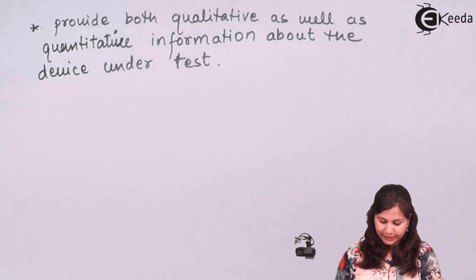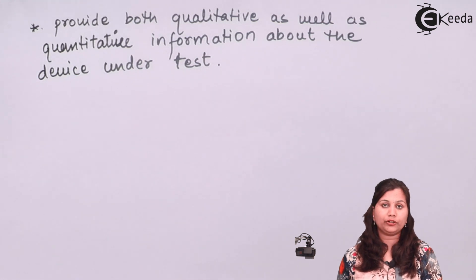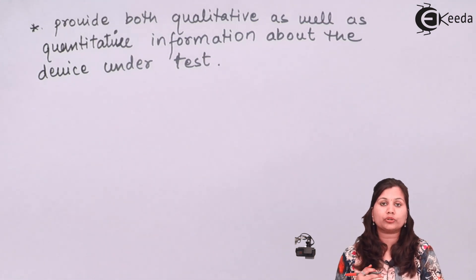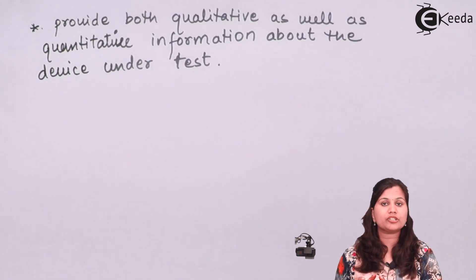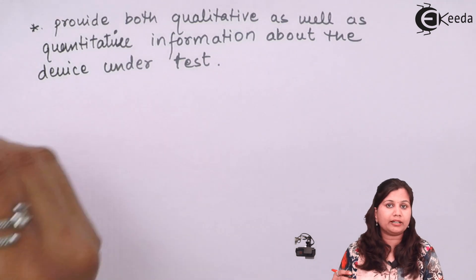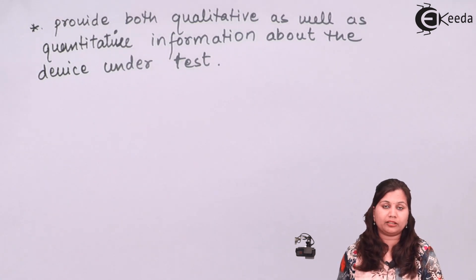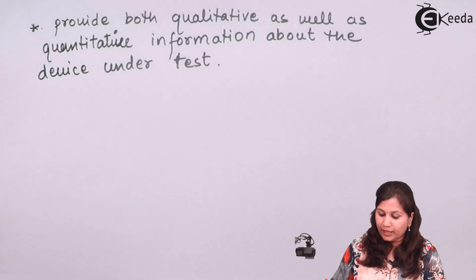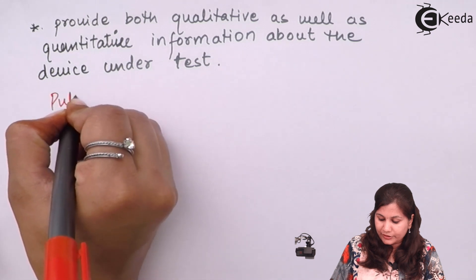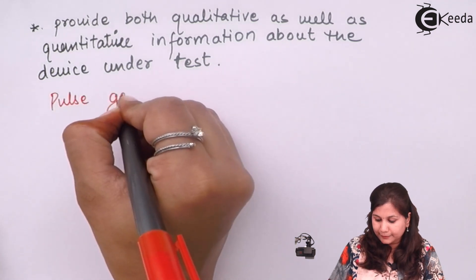The pulse generator is used to generate the rectangular pulses. There are also another type of generators called the square wave generators which generate the square wave. There is a very slight difference between the two — the pulse generator generates the rectangular pulse, while the square wave generator generates the square wave.